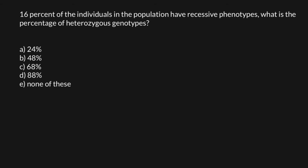In order to solve this problem, everything we have to know is the Hardy-Weinberg formula. The frequency of the three genotypes equals p squared plus 2pq plus q squared. Here, f stands for the frequency of the three genotypes, which in this formula are represented by p squared, 2pq, and q squared.